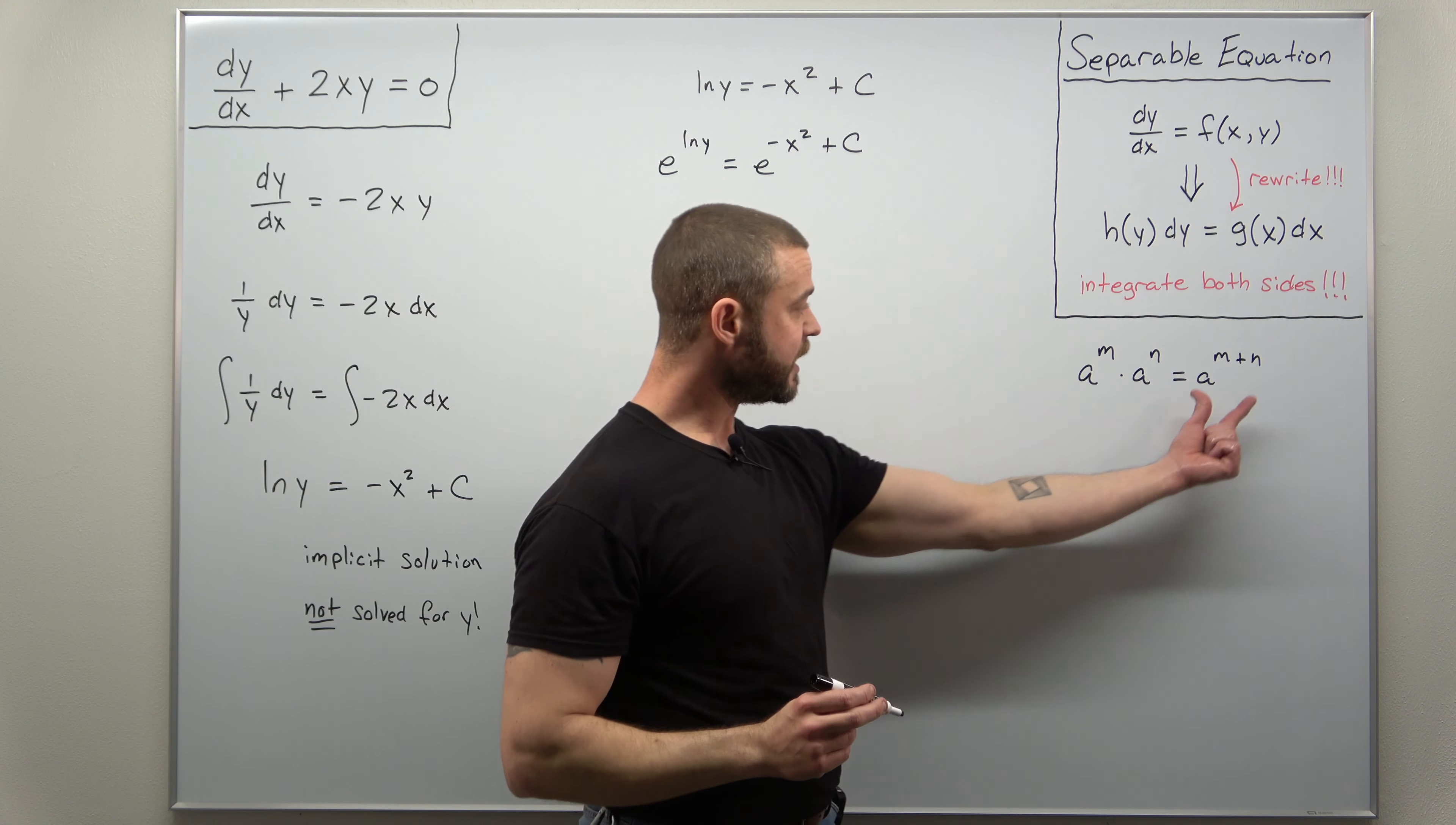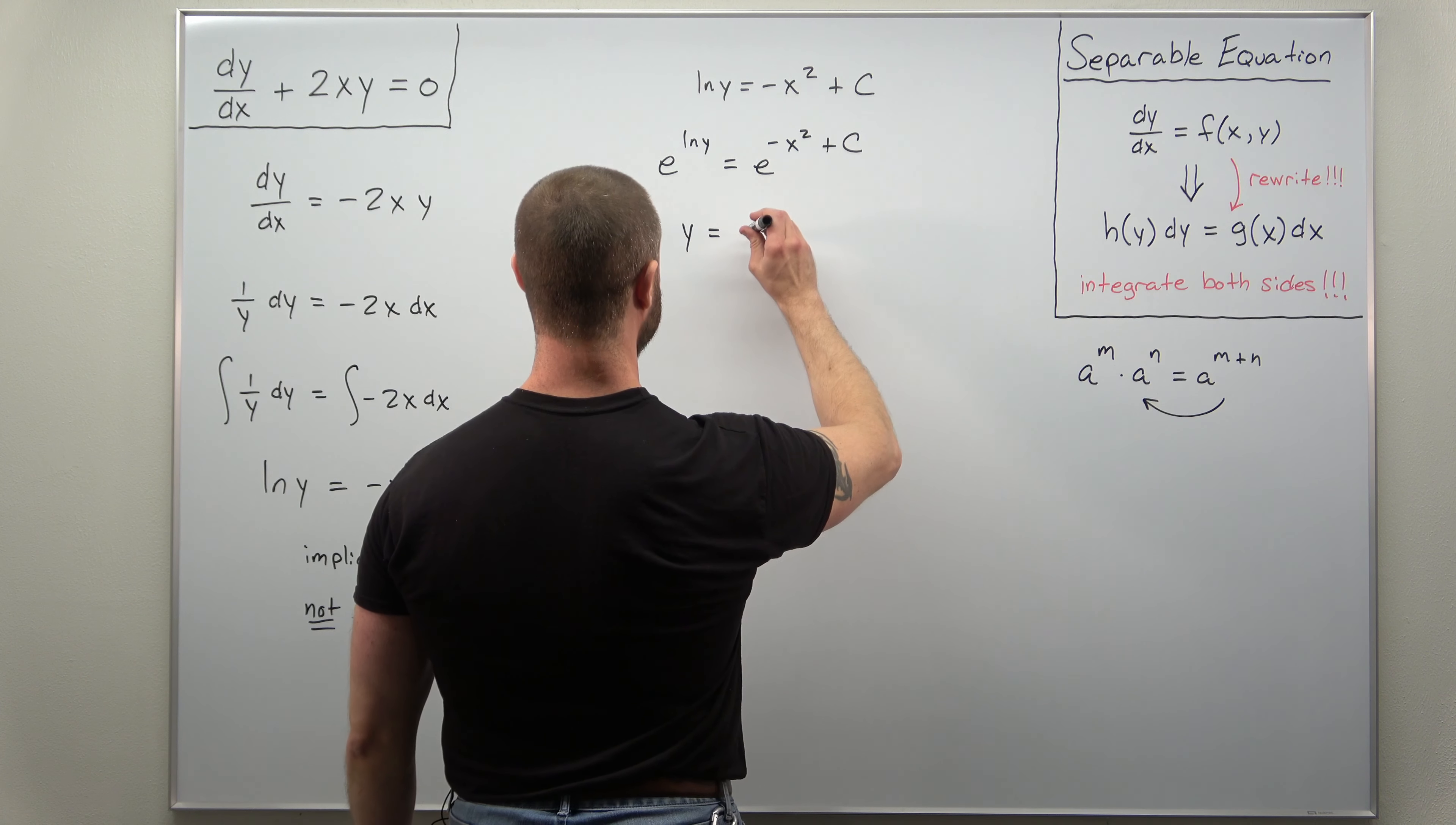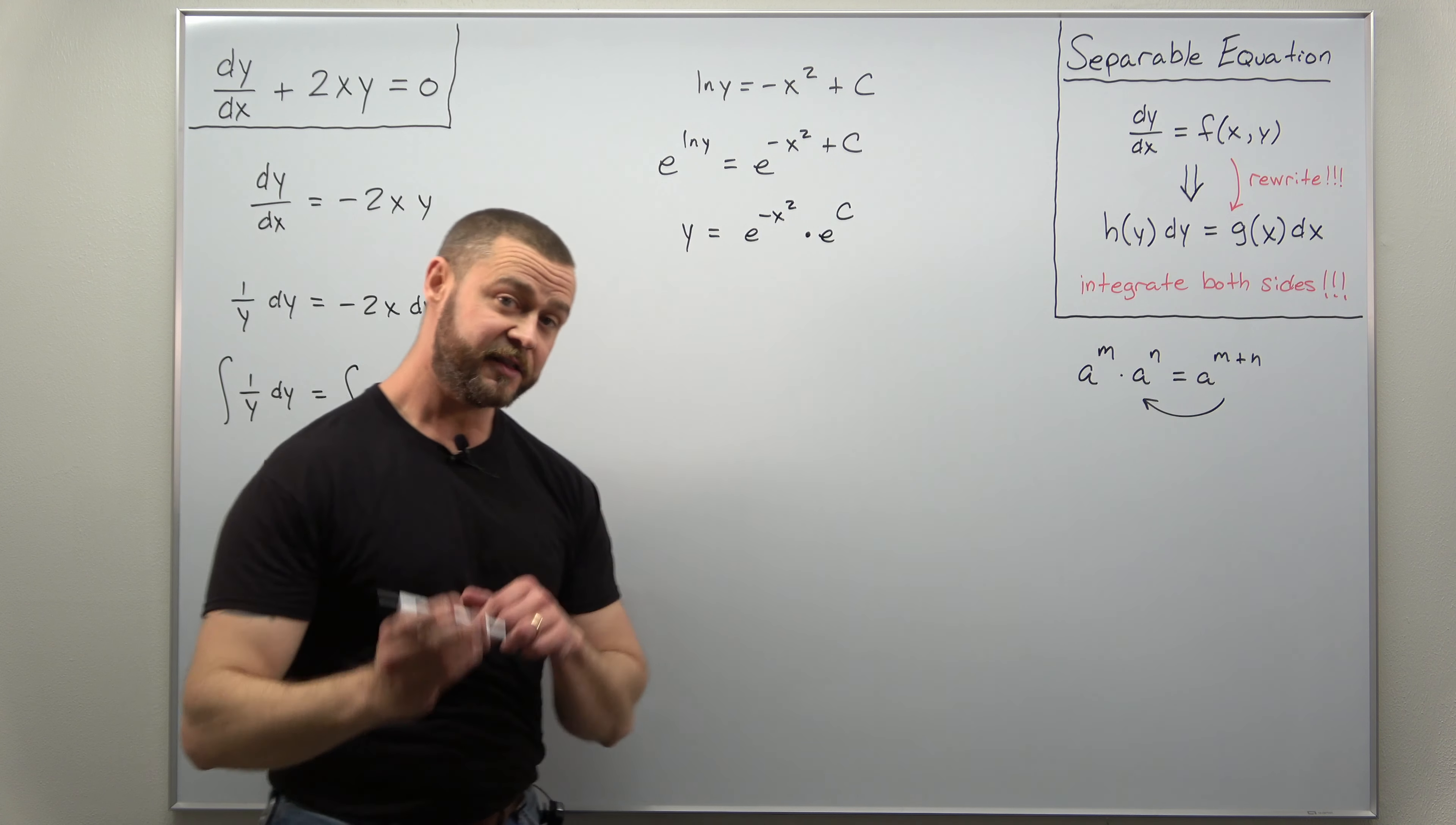But we're going to be using it going from the right side to splitting that apart. Alright, so if I rewrite this we'll get e to the negative x squared times e to the c.